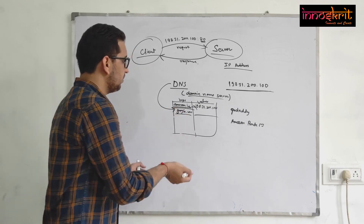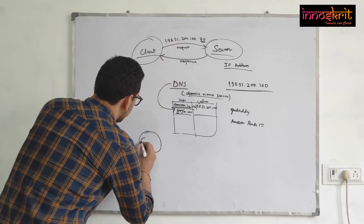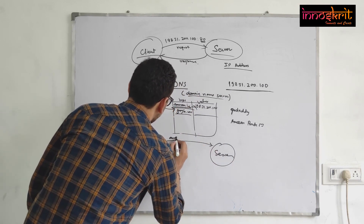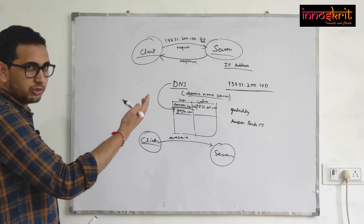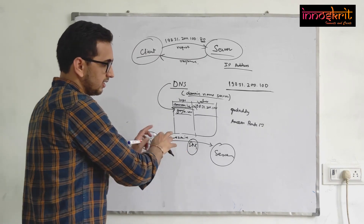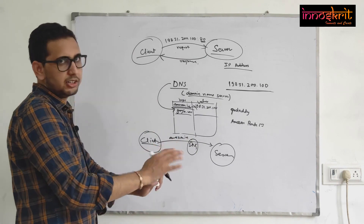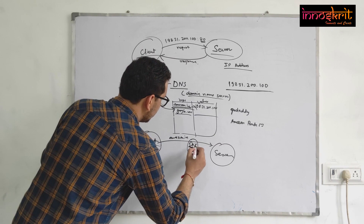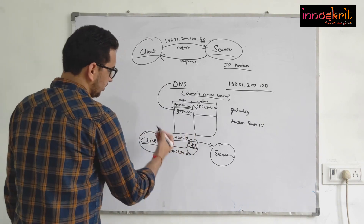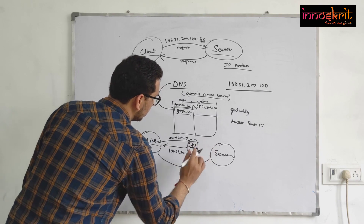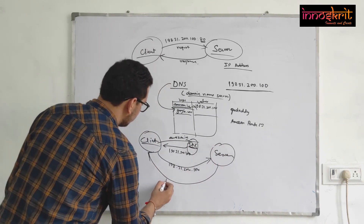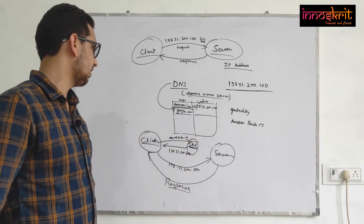When the client wants to access something, they type for example amazon.in in the browser. This request first goes to the DNS — browsers sometimes cache DNS entries, but generally it goes to DNS — and DNS tells the client the corresponding IP address for amazon.in. The client then uses that IP address to reach the server directly, and the server responds with the content.